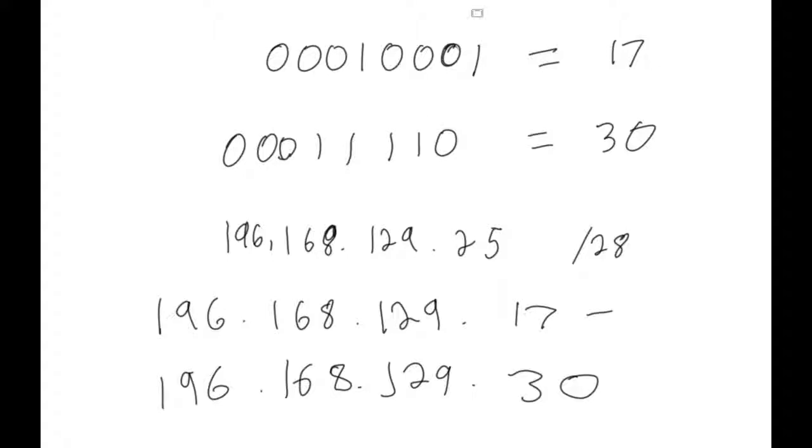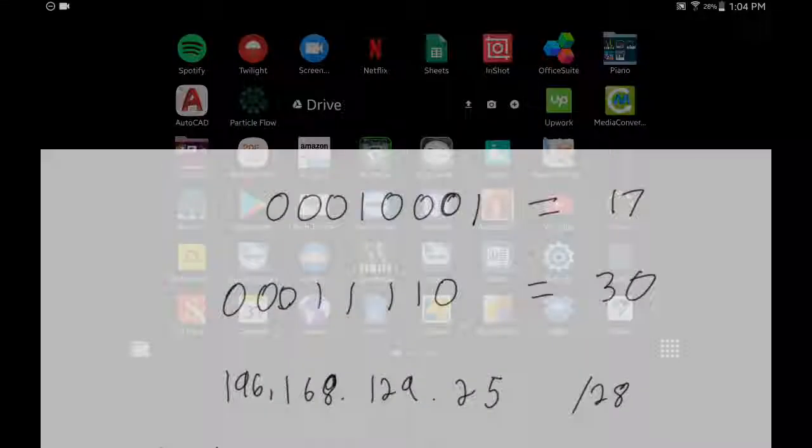Hopefully, that makes subnet masks make a little bit more sense, and how to find the valid host range from that. If you get confused with this, just think of the subnet that you're in as being an extension of the network. And keep that subnet constant to figure out the valid host range. And then, remember that you can't use all zeros, and you can't use all ones, because all zeros is going to be your subnet mask ID, and all ones is going to be your broadcasting address. Hopefully, that clears a few things up, and I hope you have a wonderful day.